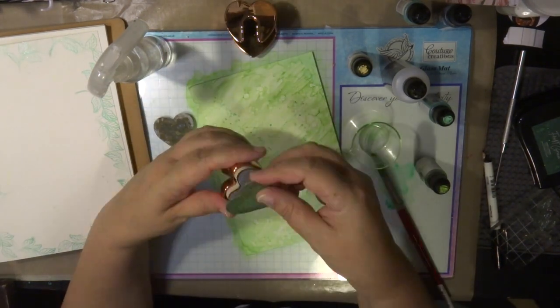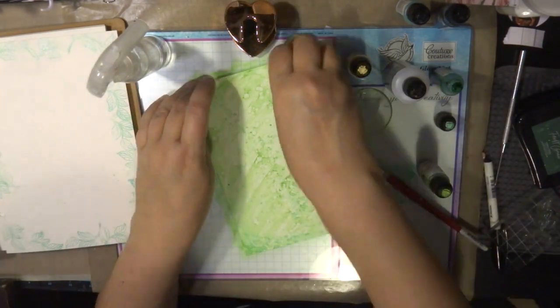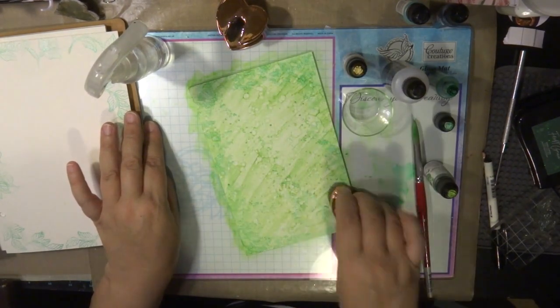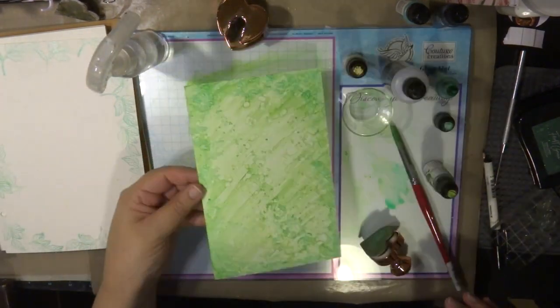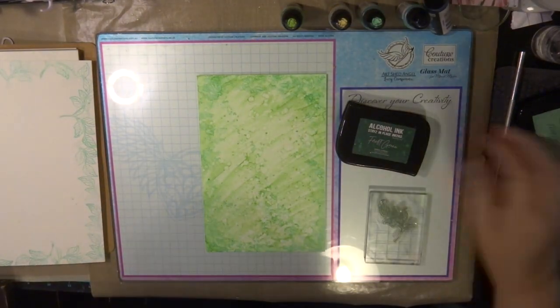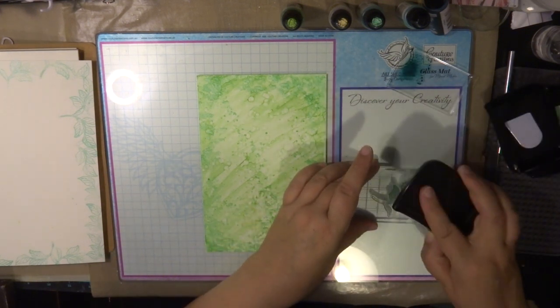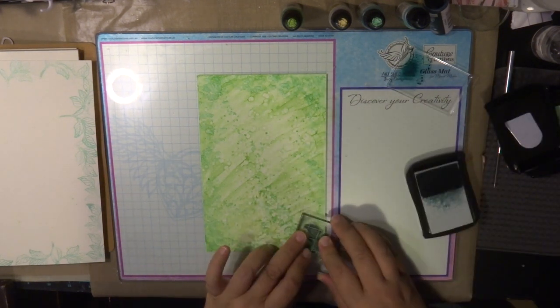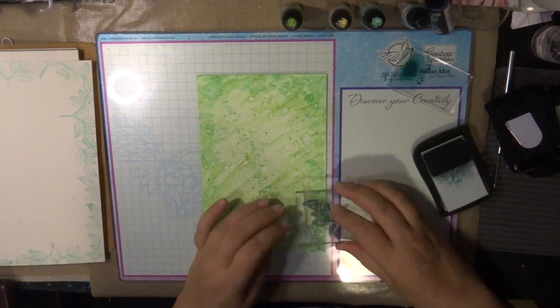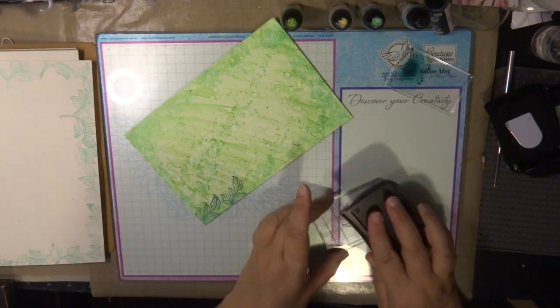Instead of a brush, you can also use a deluxe heartfelt stamp applicator. This is a great tool for creating wonderful textures and bubble effects on the edges of the alcohol synthetic paper. Here I have the forest green ink pad and my leaf stamp, and I'm just randomly stamping all around the edge.